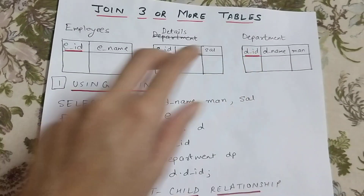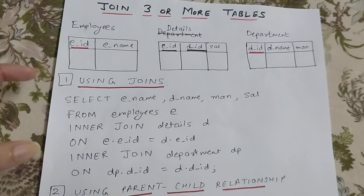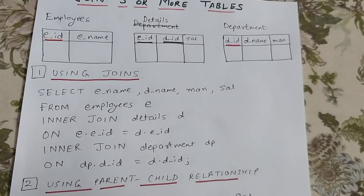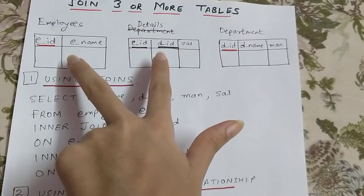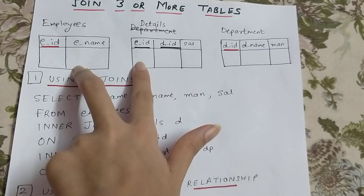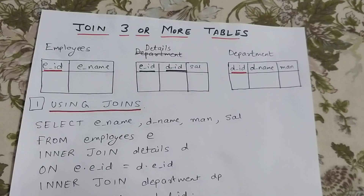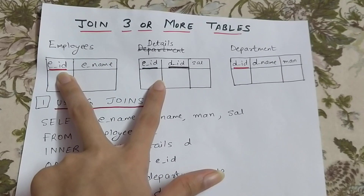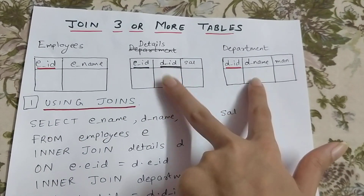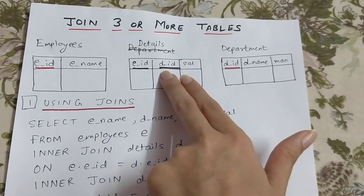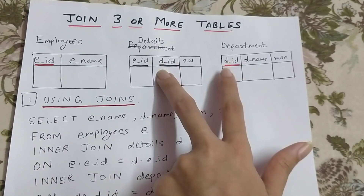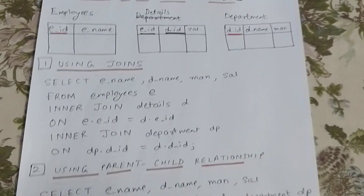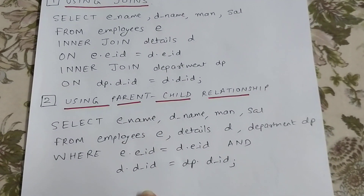This is how we join three tables. First we join the employees and details tables on the common attribute E_ID, and then we join those results with the department table on the common attribute D_ID.